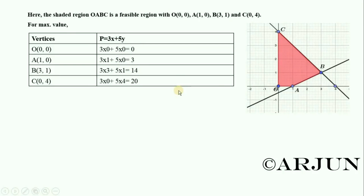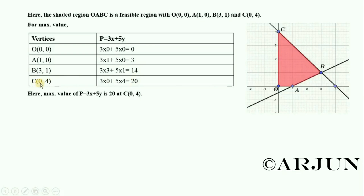From the table we can see the values. The minimum value of P equals 3x plus 5y is 0. The linear programming is now complete. Thank you for watching.